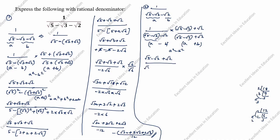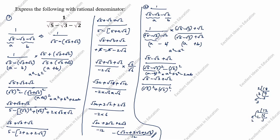Next: root 5 minus root 3 plus root 2, divided by a squared — which is (root 5 minus root 3) whole squared — minus b squared — which is root 2 whole squared, equal to 2. We apply the (a − b)² formula: a² + b² − 2ab, where a is root 5 and b is root 3. So: root 5 whole squared plus root 3 whole squared minus 2 times root 5 times root 3, minus 2.